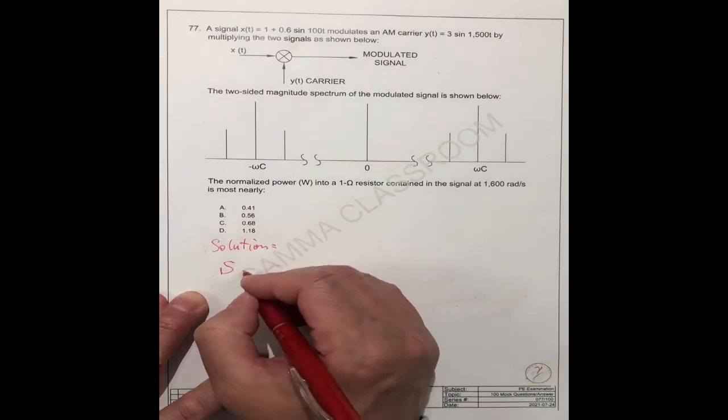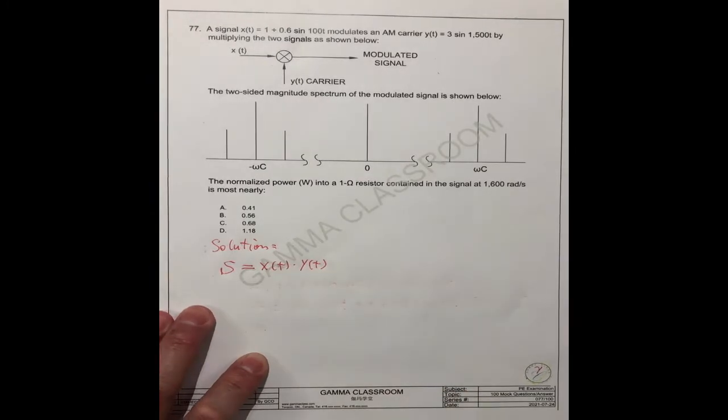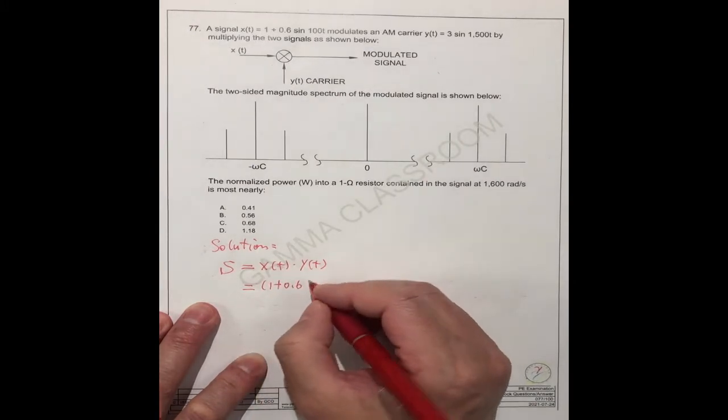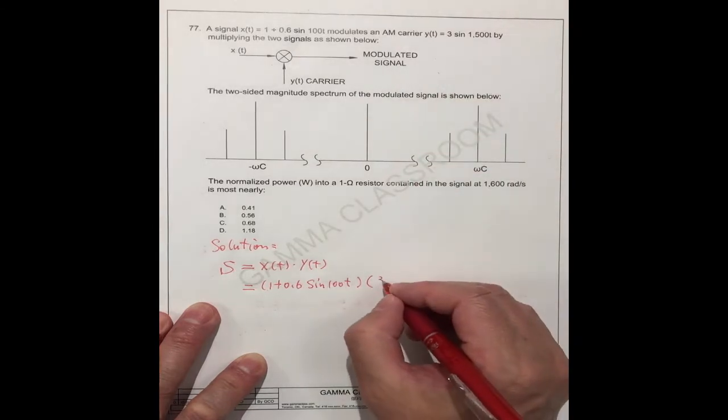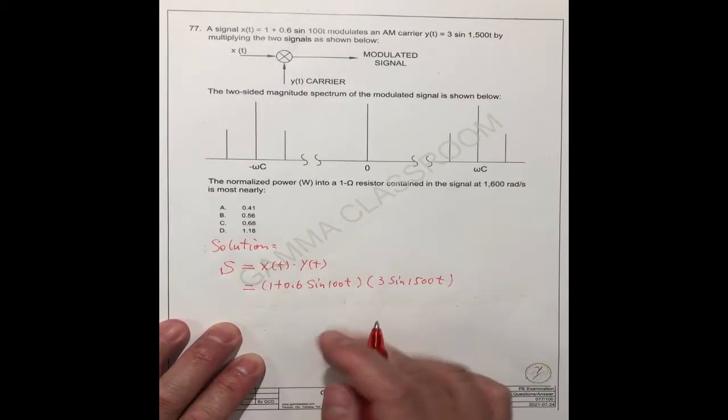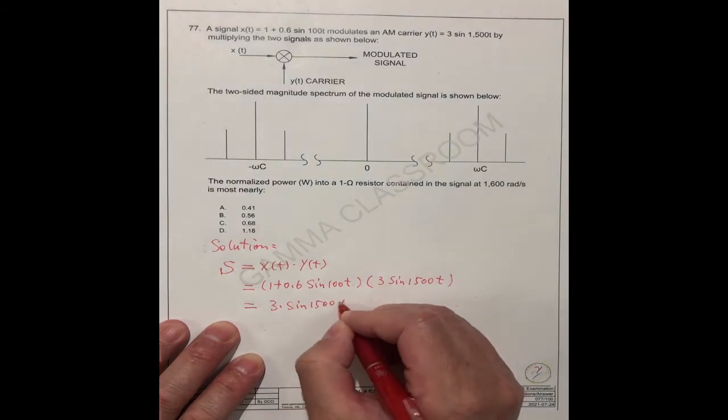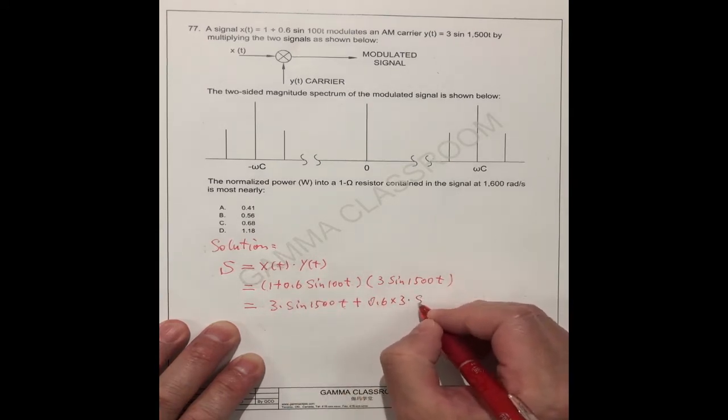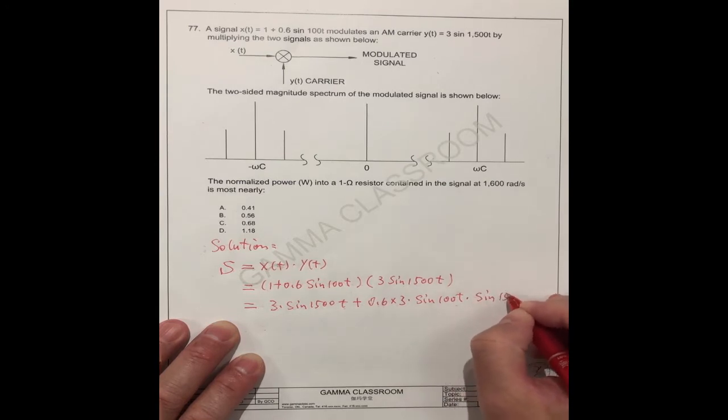For the modulated signal, we call it x(t) times y(t). And x(t) equals 1 + 0.6sin(100t). And x(t) times y(t) equals 3sin(1500t). So you can multiply these two. This is 3sin(1500t) and x(t) times sin(1500t).